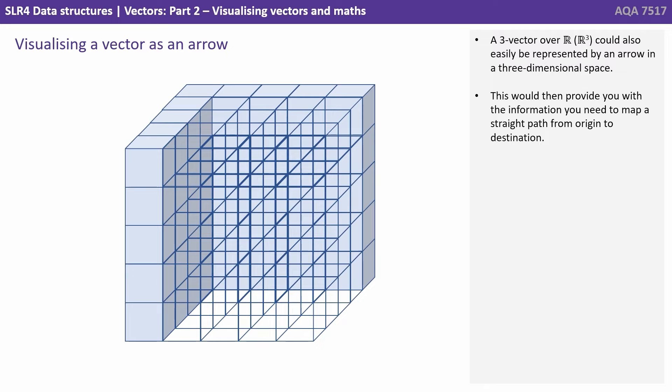A three vector over R could also be represented by an arrow in a three dimensional space. This would then provide you with the information you need to map a straight path from the origin to a destination.